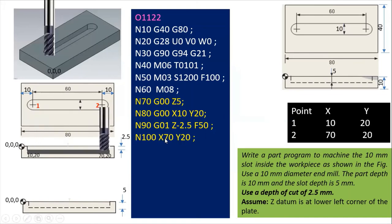After taking the first depth, the cutter has to move to point number two. So the next coordinates are X70, Y20 — meaning the cutter moves from point one to point two. At this depth of cut, 2.5 mm of material is removed. After that, to achieve the total depth of 5 mm, I take another pass. Block N110: Z-5 — the complete depth is now taken.